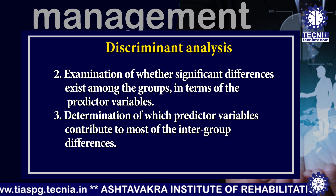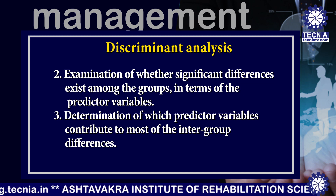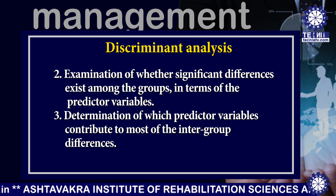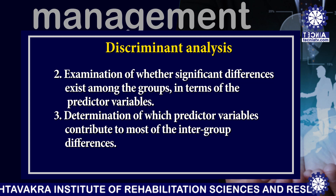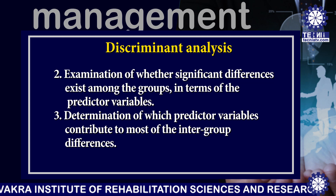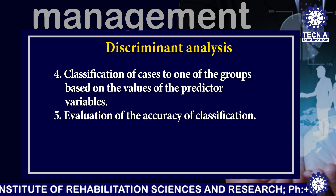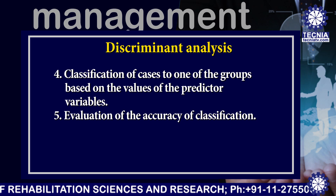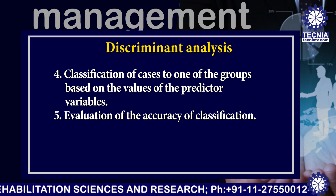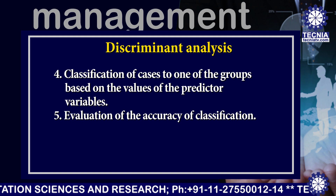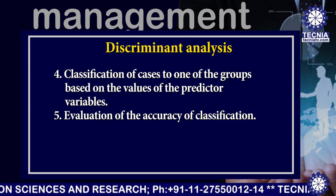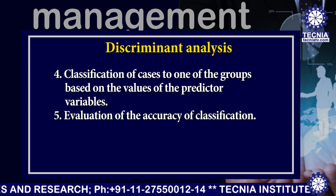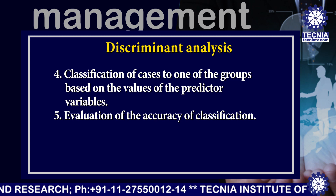Third, determination of which predictor variables contribute most to the intergroup differences. Fourth, classification of cases to one of the groups based on the value of the predictor variables. Fifth, evaluation of the accuracy of classification.